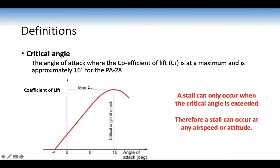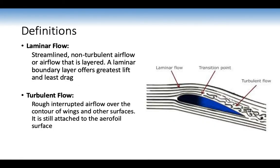A stall can only occur when the critical angle is exceeded; therefore a stall can occur at any airspeed or attitude. Laminar flow is streamlined, non-turbulent airflow — layered airflow with a laminar boundary layer — that offers the greatest lift and least amount of drag. In straight level flight it's nice smooth airflow offering the greatest lift and least drag.